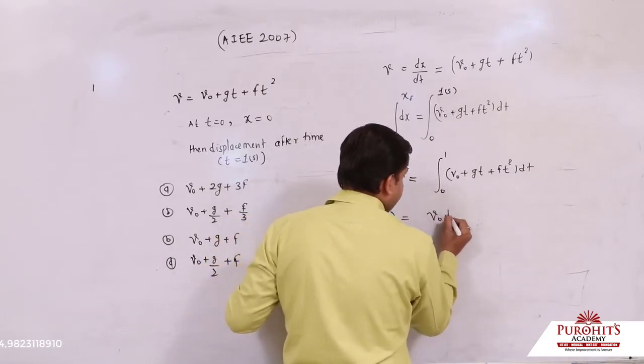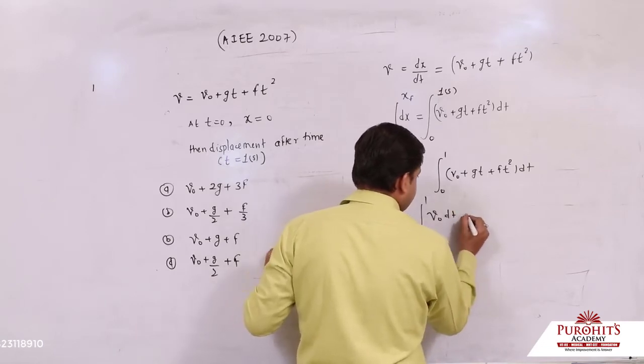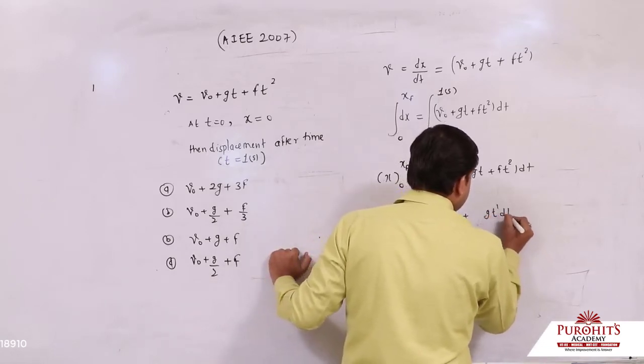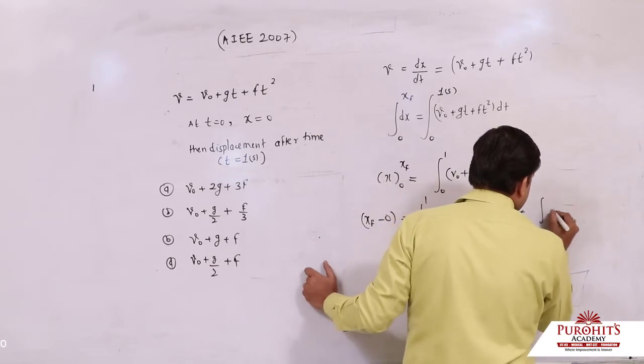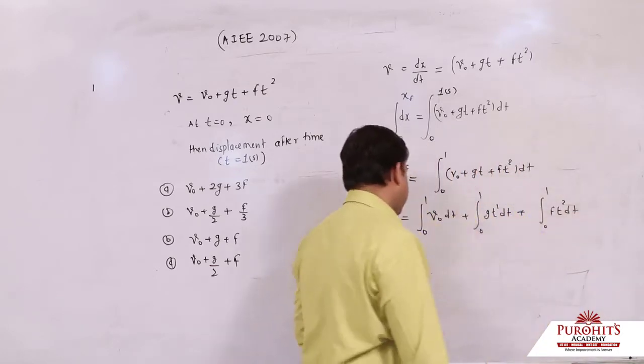v0 dt from 0 to 1, dt to the power 1 from 0 to 1, ft square dt from 0 to 1. Now what happened? Look carefully.